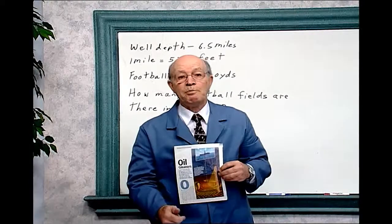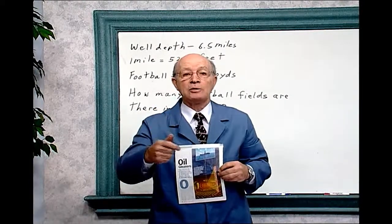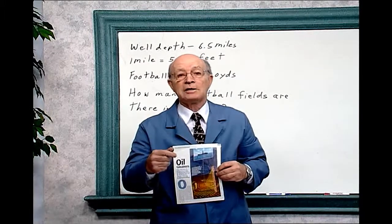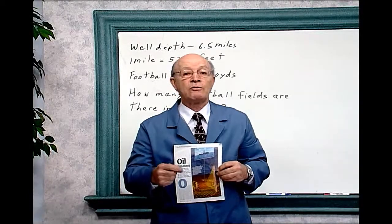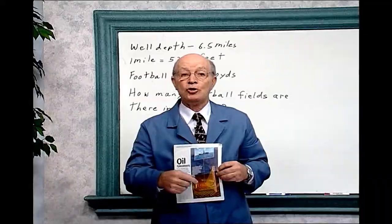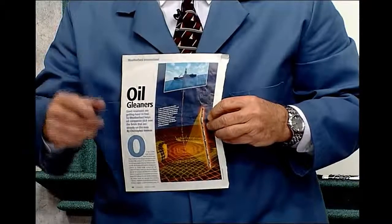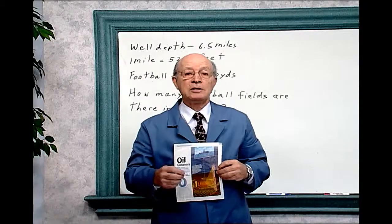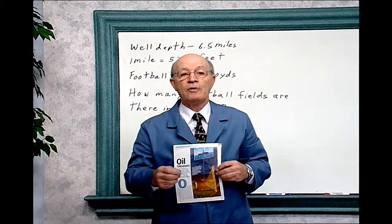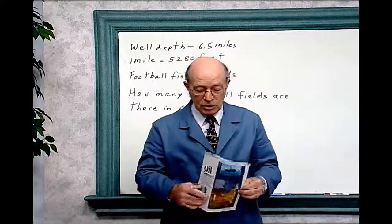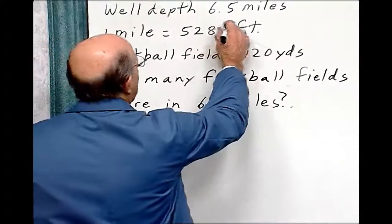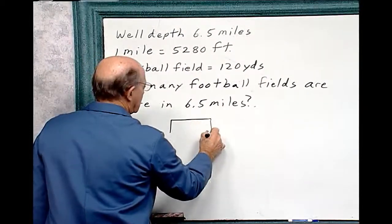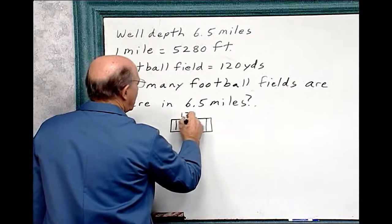The information is bounced back to the ship by electromagnetic pulse for optical fiber. Now think about that. Down 6.5 miles down, the temperature is 450 degrees Fahrenheit, and the pressure is 2,000 times the atmospheric pressure. Normal drill tools would melt or be crushed. To get an idea of the depth, let's compare 6.5 miles to the length of the number of football fields. So let's look at that. The depth is 6.5 miles, and one mile is 5,280 feet. And one football field, that includes the end zones, is 120 yards.